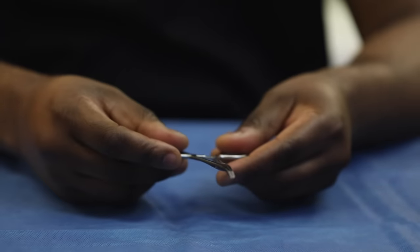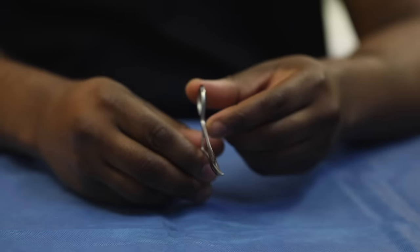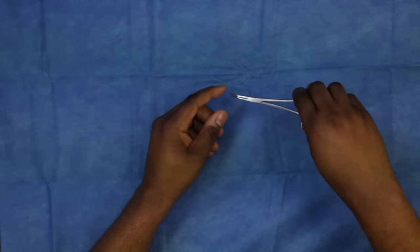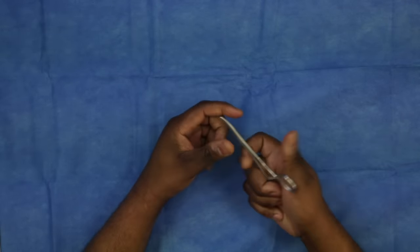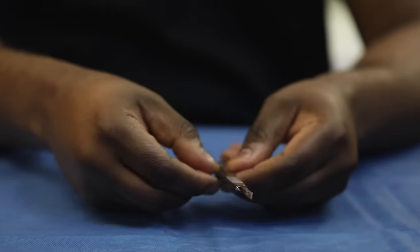The second instrument that's in here is actually a hemostat. This is when we're grabbing certain tissues. If we have a suture that we need to grab that's deep in the wound, we can use this to grab that particular object. If we need to grab a vessel, we can use it to grab a vessel. And the same thing, you want to use your palm to open and close it.